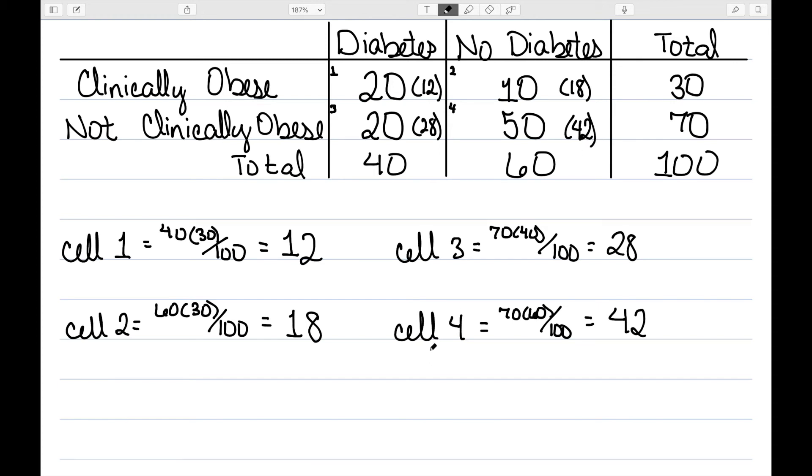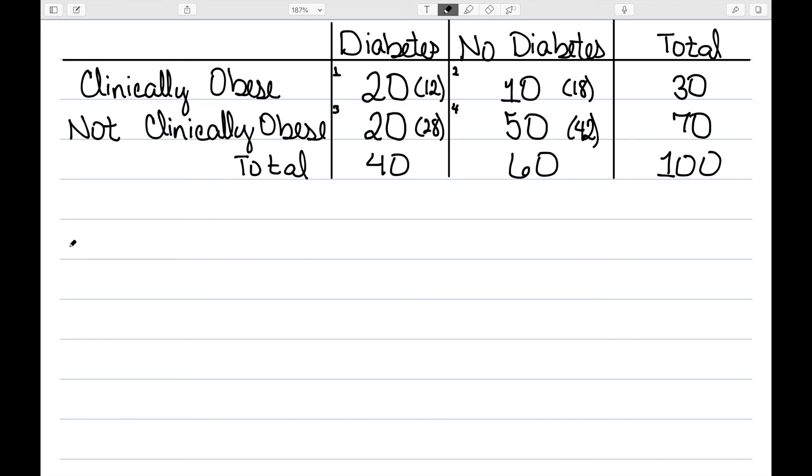So now I have all of my expected cell values. Now that I've done that, I can actually find the value of chi-squared, my test statistic. So for each one of my values, I do the observed minus the expected. So for cell one, I have 20 minus 12 squared divided by the expected, which is 12.